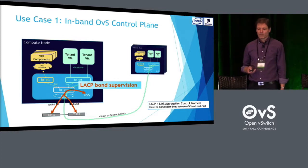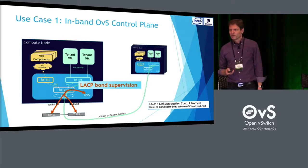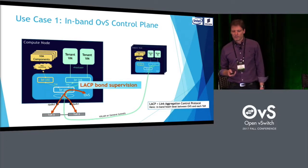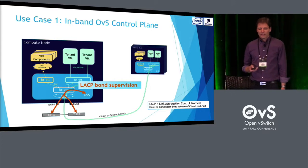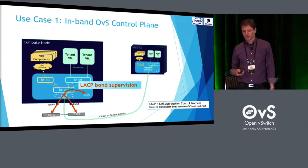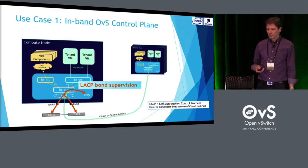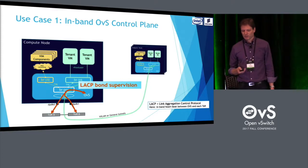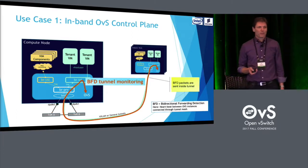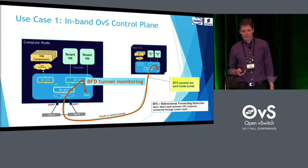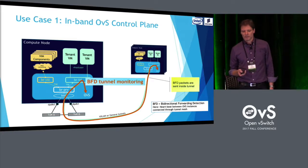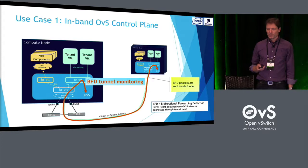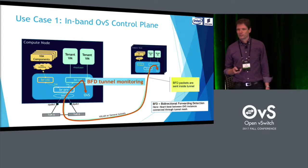I have three particular use cases. The first, and most critical, is the in-band OVS control plane. We use bonding on the physical network, so there is typically a protocol called LACP running between OVS and the TOR switches to supervise the state of the links — that is in-band with the tenant data. Similarly, BFD (Bidirectional Forwarding Detection) is used by the SDN solution to monitor connectivity between compute nodes, carried through overlay tunnels like VXLAN or Geneve.